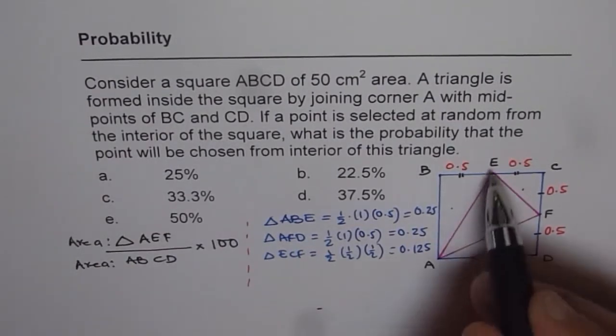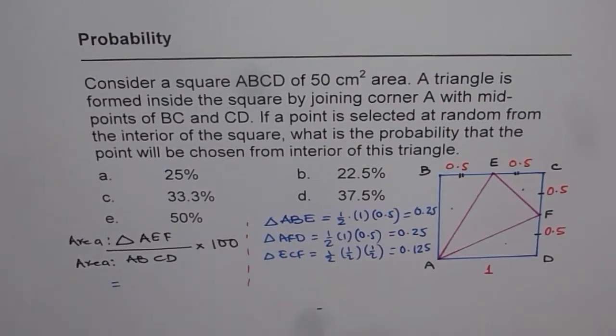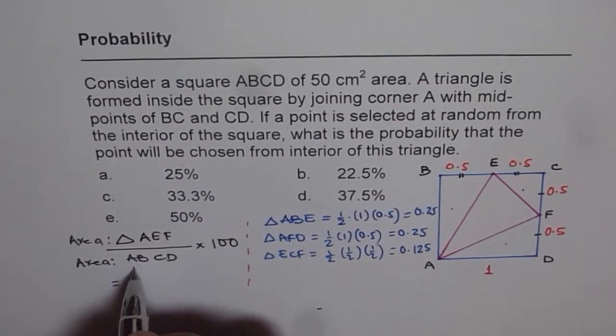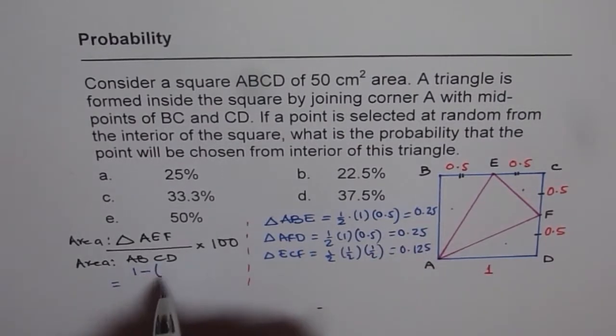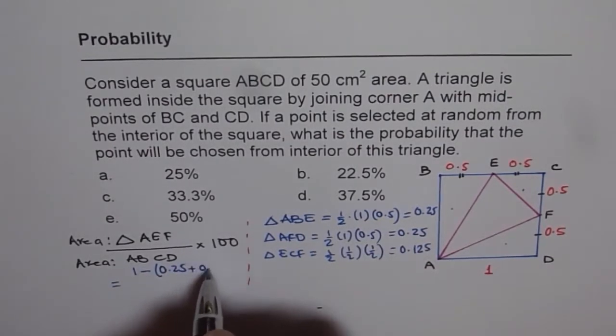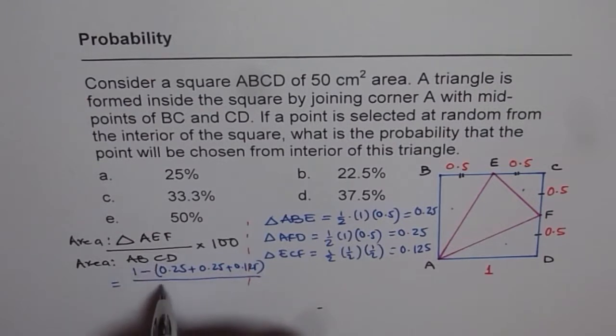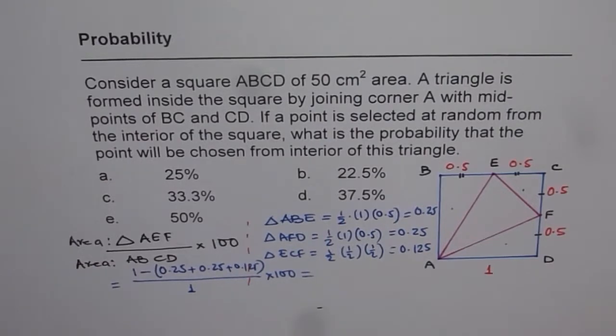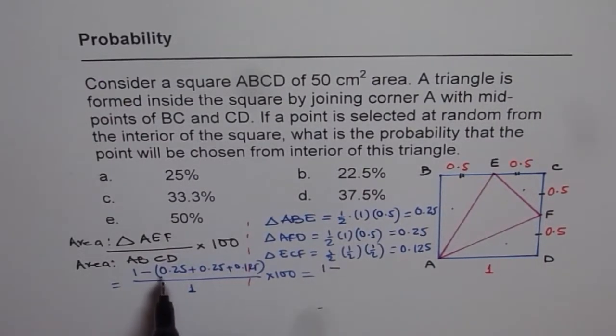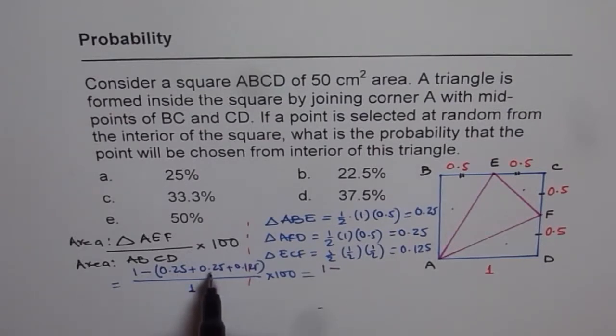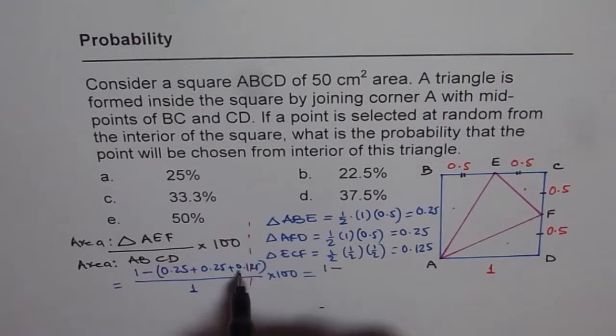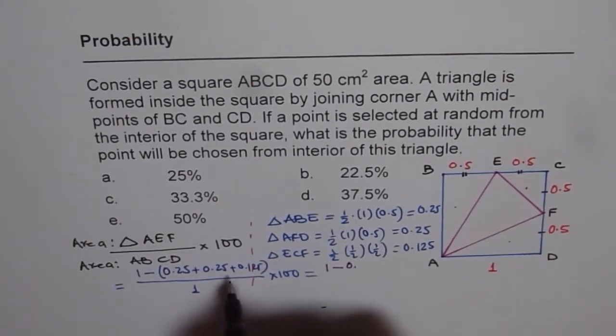Now the area of triangle AEF, therefore, should be equal to what? Now we can write area of triangle AEF is 1 minus sum of these. 1 minus 0.25 plus 0.25 plus 0.125 divided by the whole area, which is 1 times 1 times 100. So it is basically equal to 1 minus 0.5 and then we have 0.625.